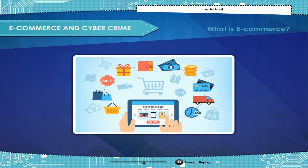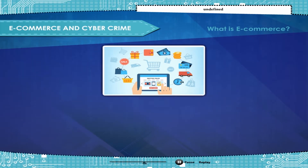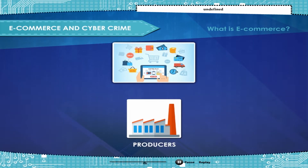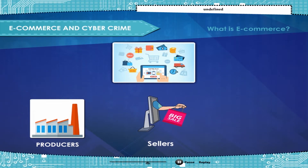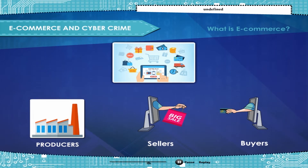E-commerce revolves around these categories of people. Producers are the people who produce different kinds of products or items and provide services. Sellers are the people who sell items or goods and give services to people. Buyers are the people who purchase items and services.